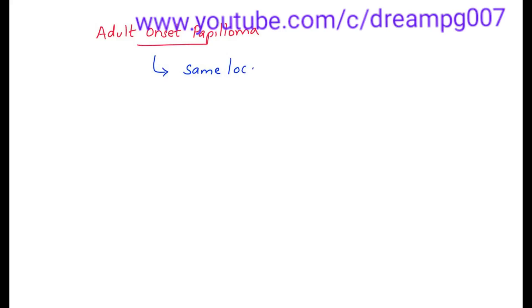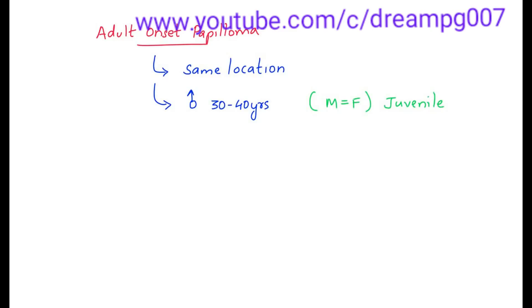The location of adult onset papilloma is the same as that of juvenile papilloma — the anterior part of the glottis. The usual age of occurrence is 30 to 40 years and it is most commonly seen in males, whereas juvenile papilloma is seen during the juvenile period with equal occurrence in males and females.